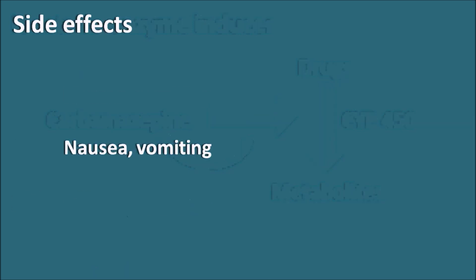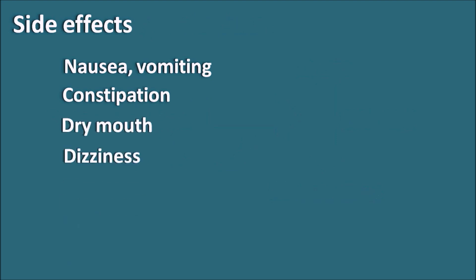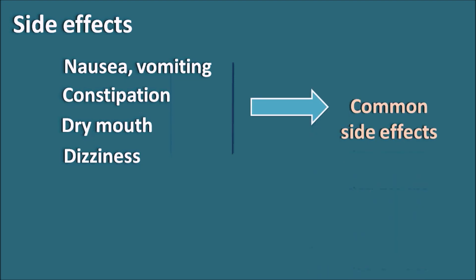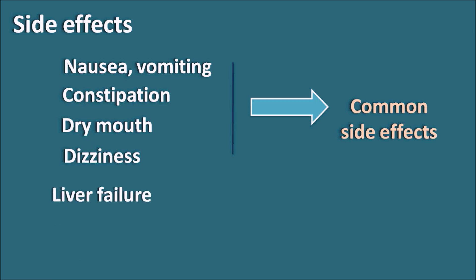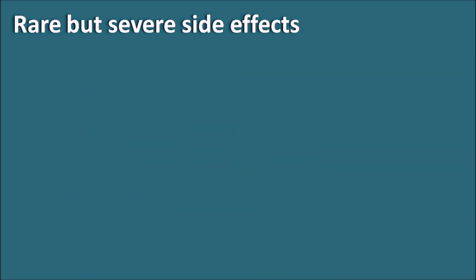Side effects of carbamazepine include nausea and vomiting, constipation, dry mouth, and dizziness as common effects. Additionally, carbamazepine can produce liver failure, resulting in abdominal pain and jaundice. Liver failure is not immediately observed and occurs only with chronic treatment in few patients, making it a rare side effect.